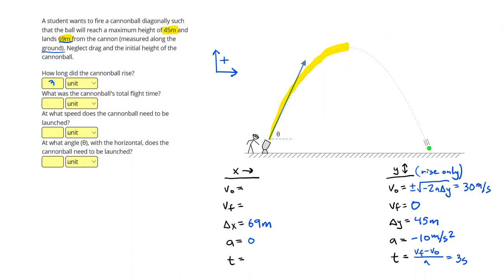So how long did the cannonball rise? That's our first answer is three seconds. What was the cannonball's total flight time? Well, once again, I can double this to get six seconds.